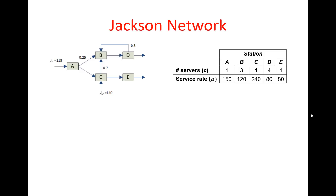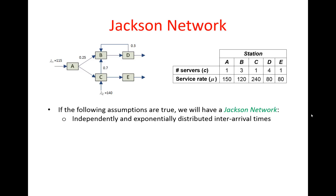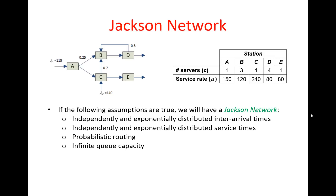Before doing that, I'd like to briefly discuss Jackson networks. A Jackson network has the following properties: inter-arrival times are independently and exponentially distributed, we have probabilistic routing, infinite queue capacities, and utilizations are strictly less than one for all servers. The nice property of a Jackson network is that we can analyze each server individually and then aggregate the results to find system performance. We'll now start solving our queuing network.